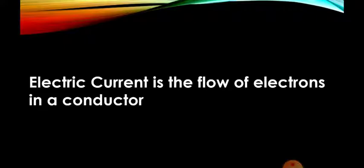Electrons are also called charges — they are negatively charged particles. There are two types of charges: static charges, which cannot move and remain in one place, and moving charges. Moving charges are again of two types: positive charges and negative charges. Negative charges are also called electrons.